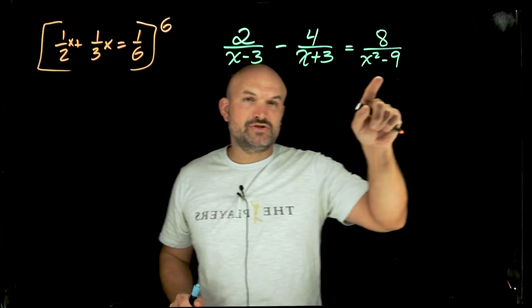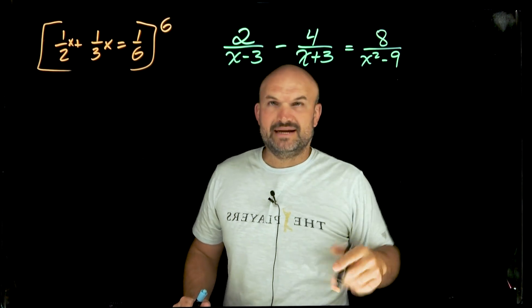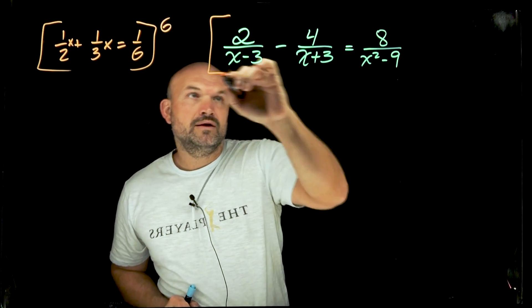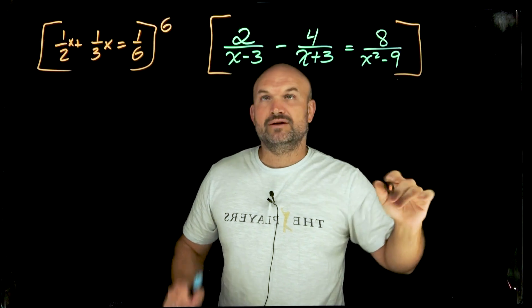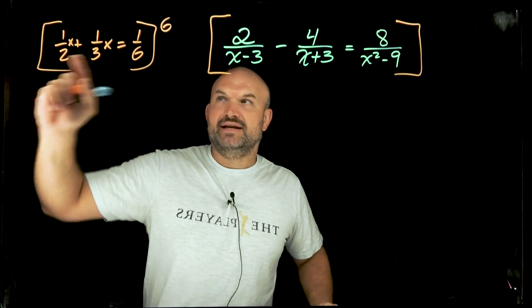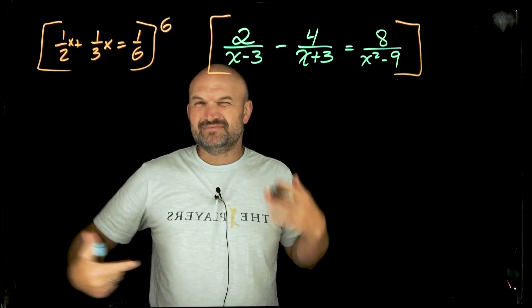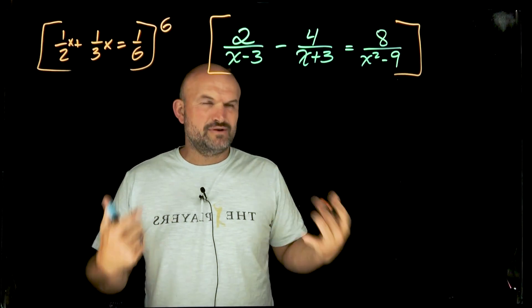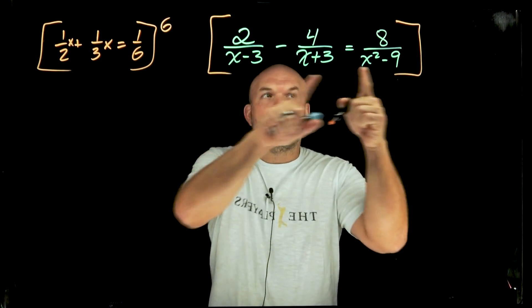So notice, x minus three times x plus three is the difference of two squares, which is x squared minus nine. So therefore, when I'm multiplying by the least common denominator with binomials or with expressions, it makes sense when you're dealing with numbers and integers. But when you're dealing with expressions, sometimes it gets a little murky. It's not as straightforward. So always look to see if those two multiply to give you a third.